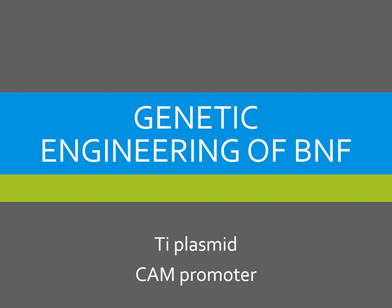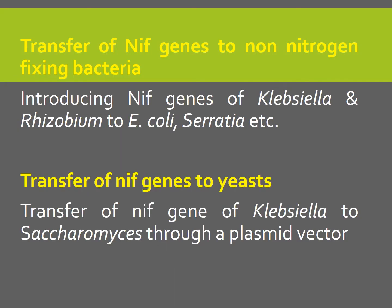Let us see what are the different methods and possibilities by which we can genetically engineer biological nitrogen-fixing ability, and what are the challenges involved. The first aspect is transfer of nitrogen-fixing genes to non-nitrogen-fixing bacteria — this includes transfer of NIF genes from Klebsiella or Rhizobium to other non-nitrogen-fixing bacteria present in the soil such as E. coli or Serratia.